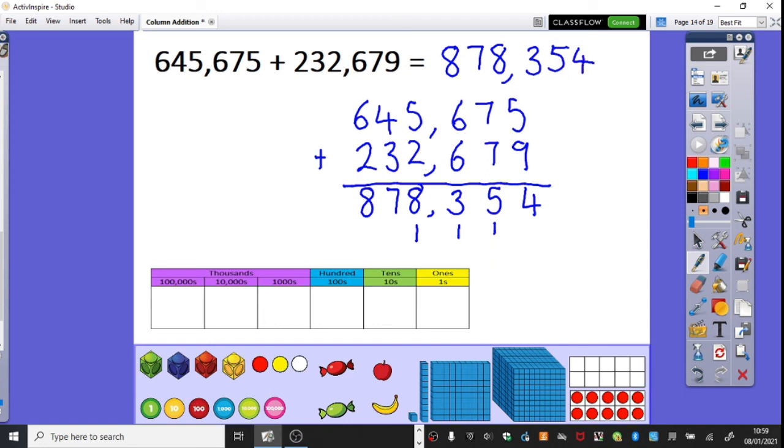You're going to work through these calculations today. Once you've completed the calculations, there are also some missing digit problems. So it might be that certain digits are blanked out like so. And you've got to work out what those digits must be. So using your inverse knowledge. And a couple of spot the mistakes. So see if you can work out where somebody has gone wrong and make sure you can put them right. We look forward to seeing your work. Thank you.